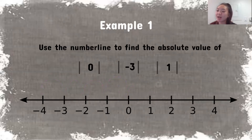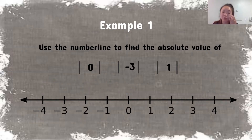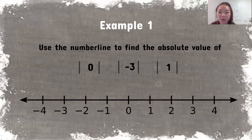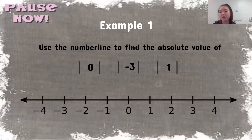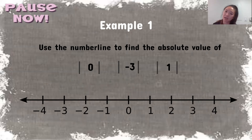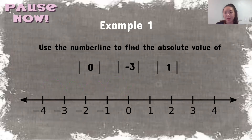Pause here for about five to seven minutes and find the absolute value of these numbers on your own: negative three, one, and zero. Use the number line — you can draw it out, use different colors, or write it in however works for you.